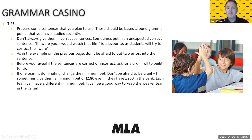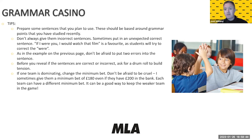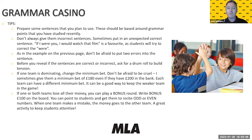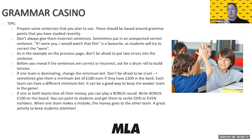Don't be afraid to put two errors into a single sentence. Before revealing, ask for a drum roll to build tension. If one team is dominating, change the minimum bet — I've raised it to 180 pounds to force them to risk more if they've been too conservative. You can also give a really hard sentence to level the playing field. If one group drops to 20 pounds, the minimum bet can be 10; if the other is at 300, you could set theirs at 280.